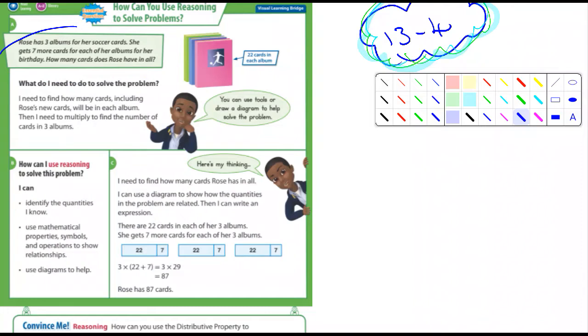But if you look around, you can see that they give us that information right there. There's 22 cards in the three albums that she's got. And it says she gets seven more cards for each of her albums. So each album gets seven more cards.